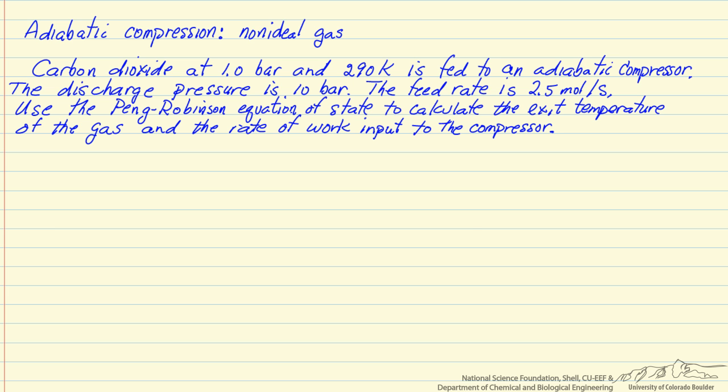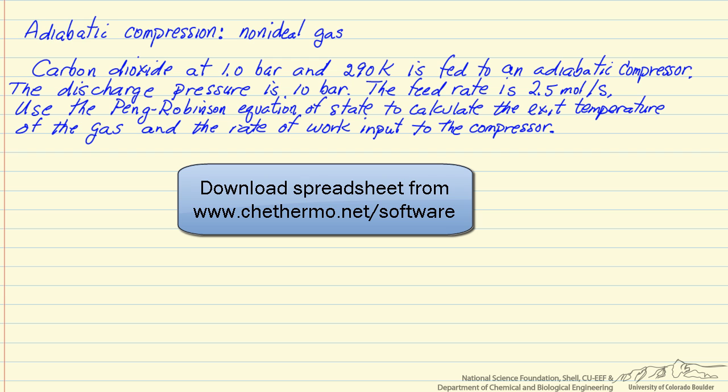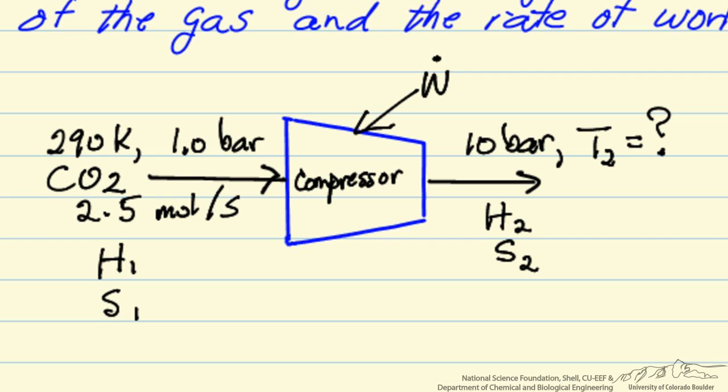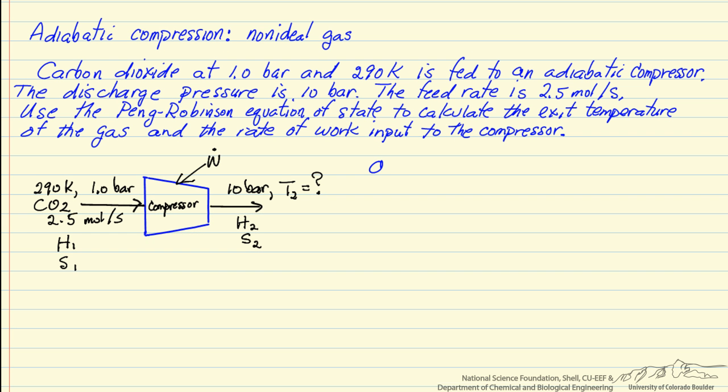We're also going to use the heat capacity as a function of temperature, and so we're going to use a spreadsheet that has this programmed into it. First thing we want to do is set up a diagram that represents the process. So we've put the inlet conditions to our compressor: 290K, 1 bar, H1 and S1, or the enthalpy per mole coming in and the entropy per mole coming in. We want to determine the enthalpy leaving per mole and the entropy so we can determine the temperature. Now we're going to assume it's reversible, otherwise we need more information about the compressor.